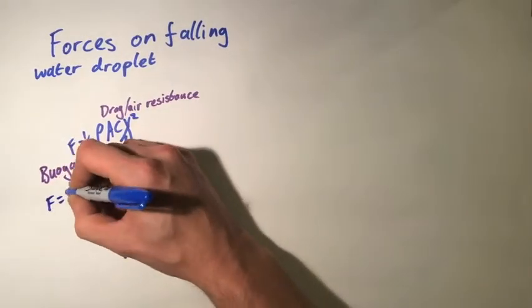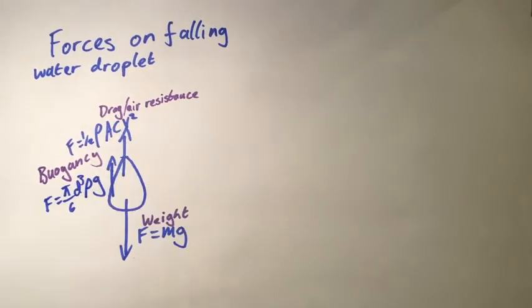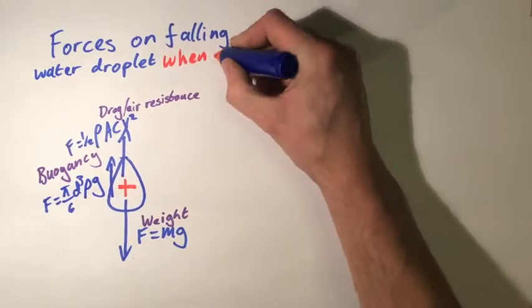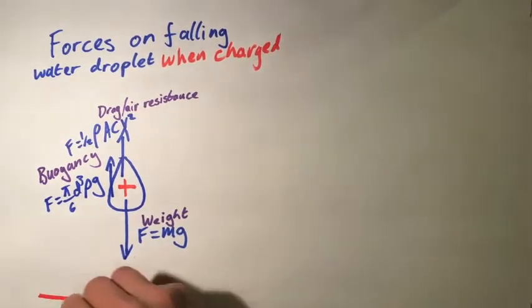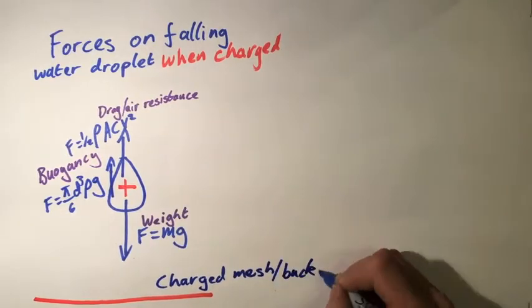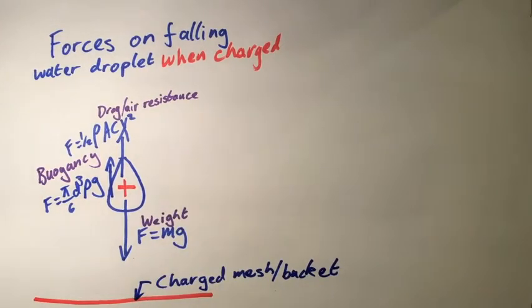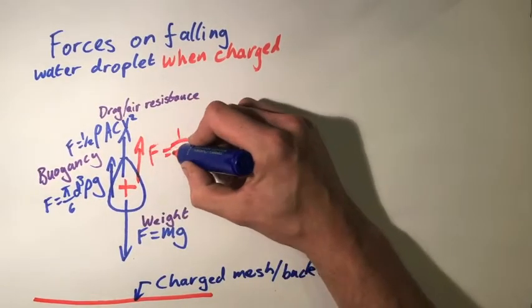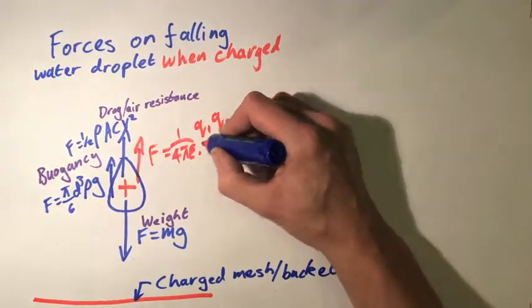The three forces I've mentioned so far are the forces on water droplets falling in a regular thunderstorm. The droplets in a Kelvin thunderstorm are charged, so there's a fourth force at play here. Because the surface that the charged droplets are falling to has the same charge as the drops themselves, there's a repelling force in an upwards direction.